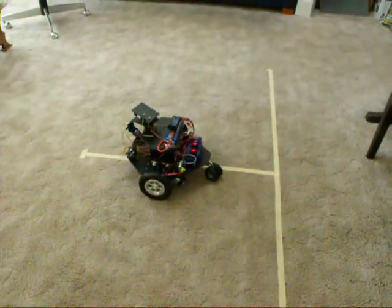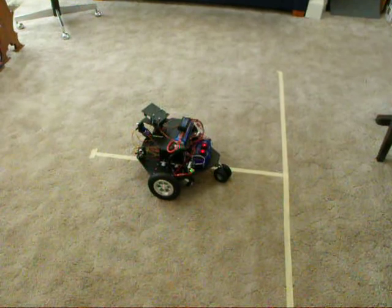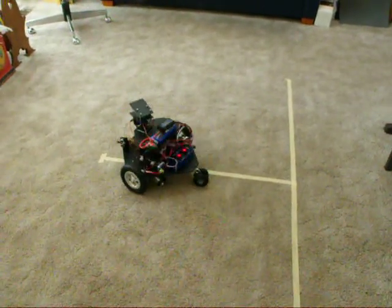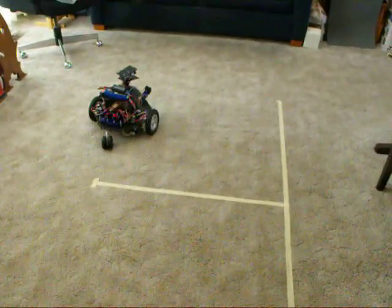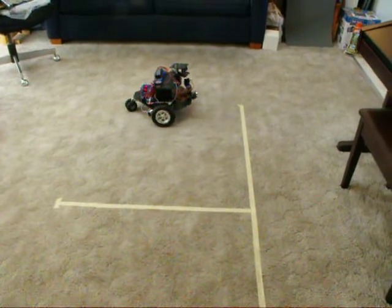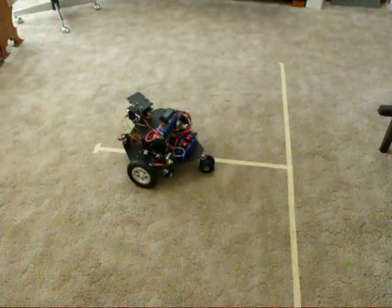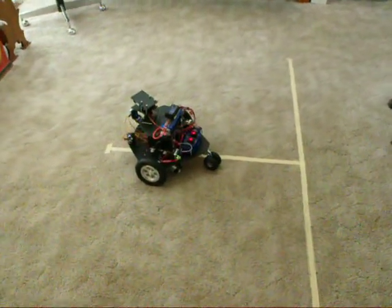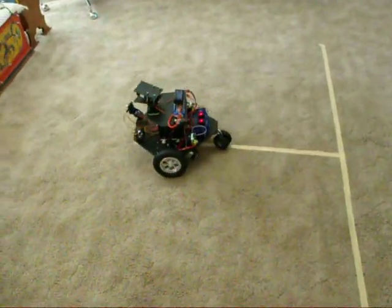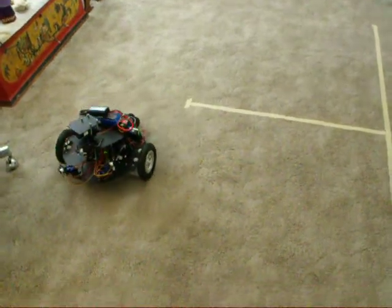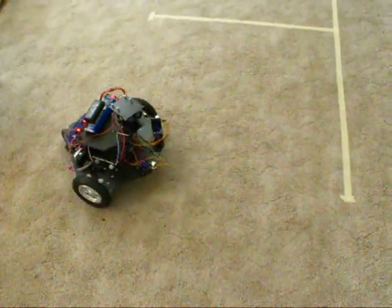And then the second figure eight, the center of the robot will follow a 1 meter diameter circle. So the center of the robot should pass over the line there. It's a little bit off. And there's the second half of the figure eight.